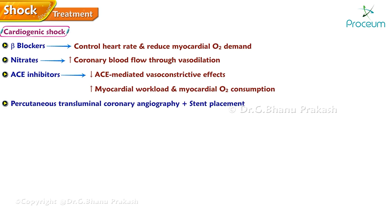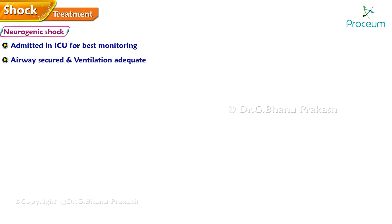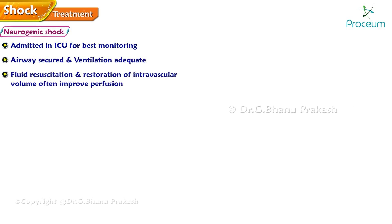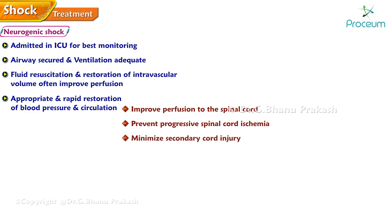Percutaneous transluminal coronary angiography with stent placement is recommended in acute myocardial infarction. Treatment of neurogenic shock: the patient must be admitted to the intensive care unit for best monitoring. After the airway is secured and ventilation is adequate, fluid resuscitation and restoration of intravascular volume often improve perfusion in neurogenic shock. Appropriate and rapid restoration of blood pressure and circulation may improve perfusion to the spinal cord and prevent progressive spinal cord ischemia.